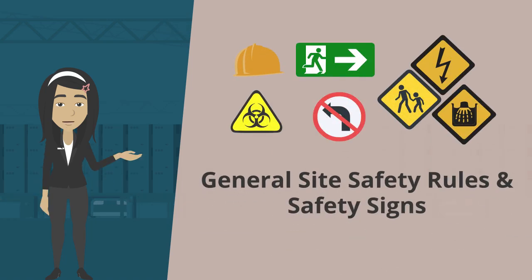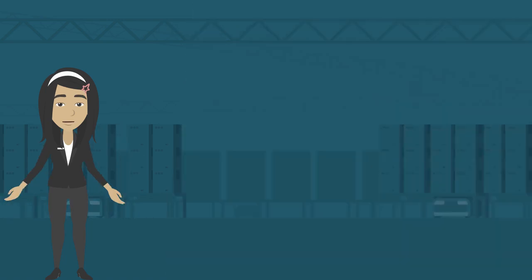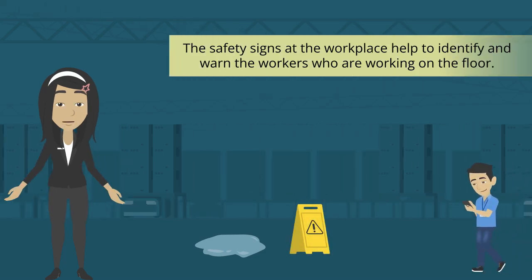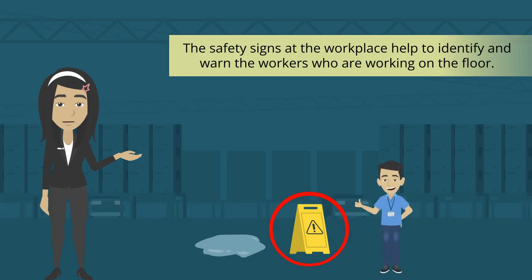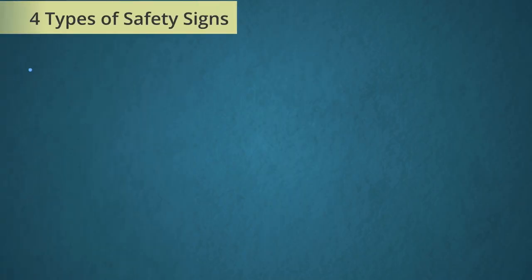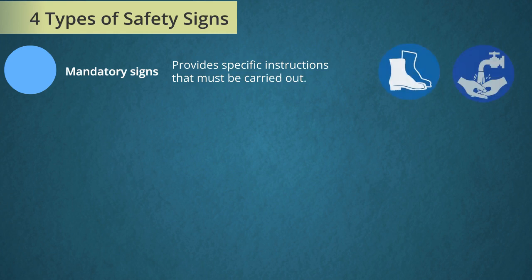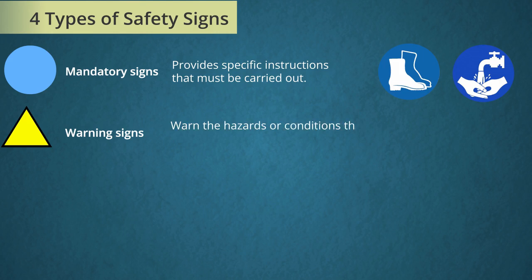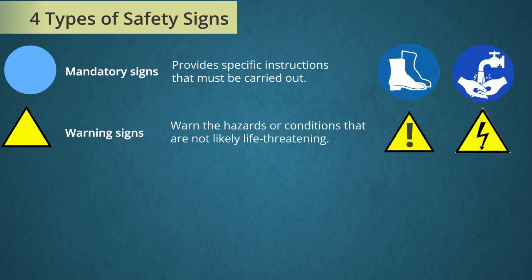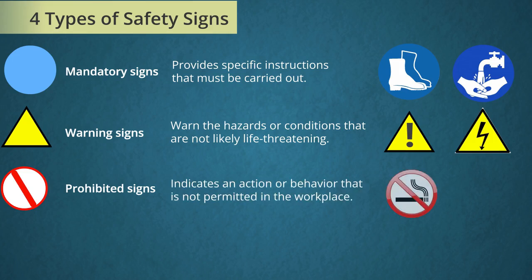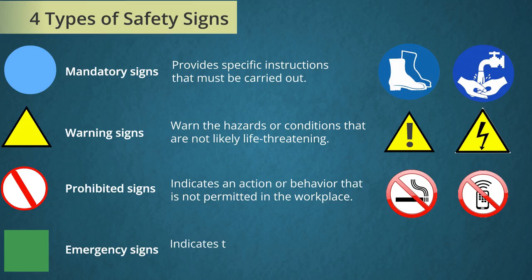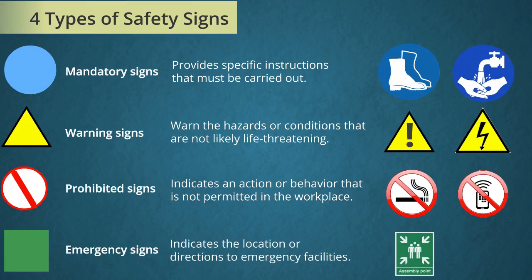Now let us understand what general site safety rules and safety signs are. Safety signs at the workplace help identify and warn workers on the floor. There are four types: mandatory signs (blue circle) provide specific instructions that must be carried out; warning signs (yellow triangle) warn of hazards not likely life-threatening; prohibited signs (red circle with strike) indicate actions not permitted; and emergency signs (green square) indicate locations or directions to emergency facilities.